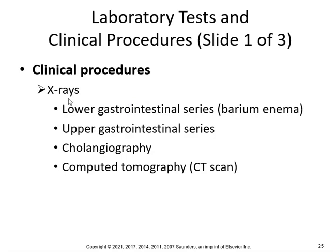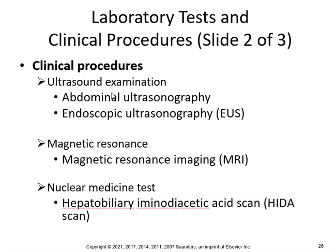What are some clinical procedures? You can do x-rays, known as radiographs. A lower GI series uses a barium enema; you can also do an upper GI series. You can do colonography or a computed tomography CT scan. You can have an ultrasound exam — abdominal ultrasonography or endoscopic ultrasonography. You can do an MRI, which is magnetic resonance imaging. And nuclear medicine — the hepatobiliary iminodiacetic acid scan, known as a HIDA scan, creates a scan of the liver. An ultrasound can be used to examine the gallbladder.